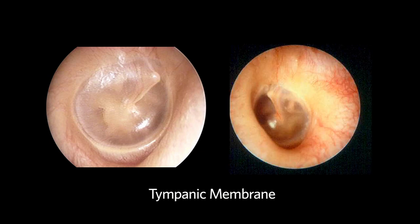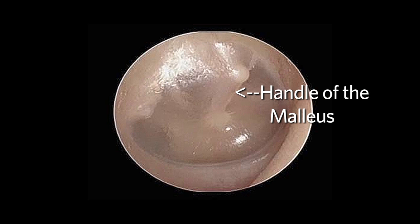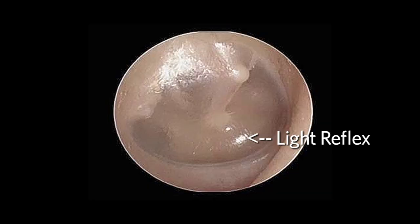The tympanic membrane may be silver or gray in color and translucent or opaque. The most prominent anatomic feature of the tympanic membrane is the handle of the malleus, which sits in the tympanic membrane and is somewhat anterior in position at its distal end. Extending from the distal end of the malleus, also known as the umbo, is the light reflex. This will help orient you towards the anterior inferior aspect of the tympanic membrane. It is important to remember that the presence of a light reflex doesn't necessarily mean that there is a normal middle ear.